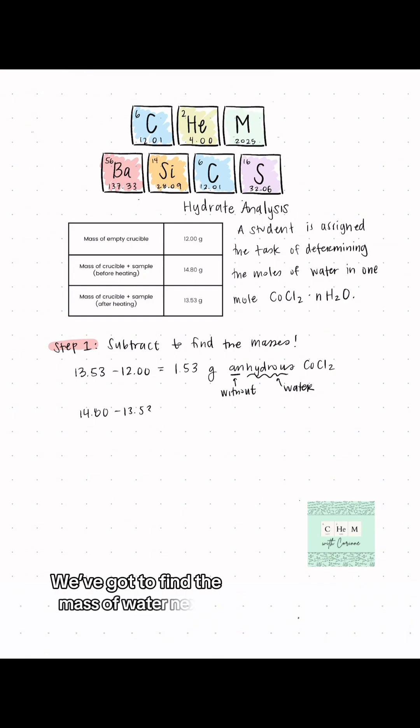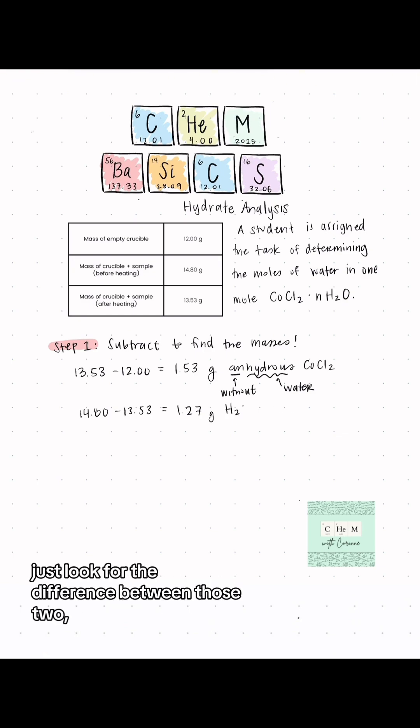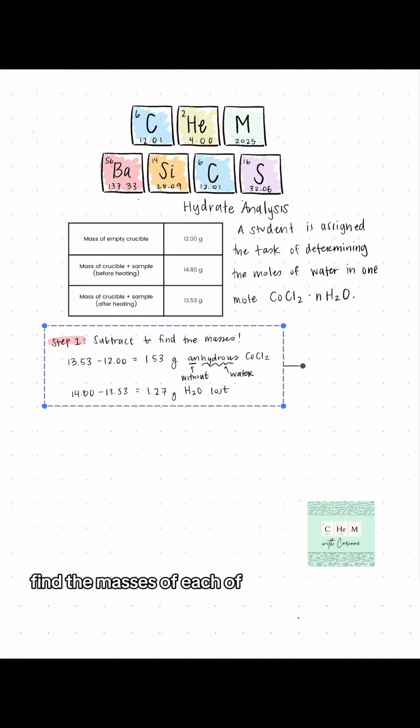The whole goal of this process is to be able to compare the water to the anhydrous salt. So guess what? We gotta find the mass of water next. So you're gonna look at the final mass where all the water has been driven off, compare that to the initial mass with the crucible. Don't even worry about the crucible. Just look for the difference between those two and you'll have your mass of water loss. So that is always step one, find the masses of each of those.